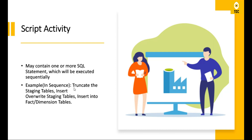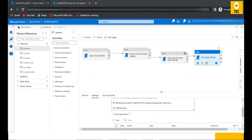For a real-time example: if you want to load data into a table, there is typically a staging layer where you flush the staging table, insert records into it, then select from staging and put data into the main layer — fact or dimension tables. This is a series of operations you need to perform, and you can handle all of them with multiple SQL statements in a single script activity, executed in sequence.